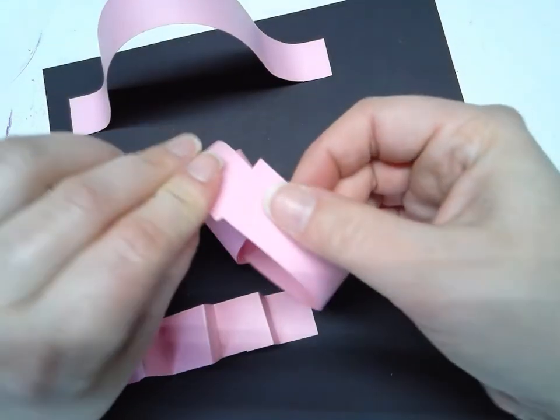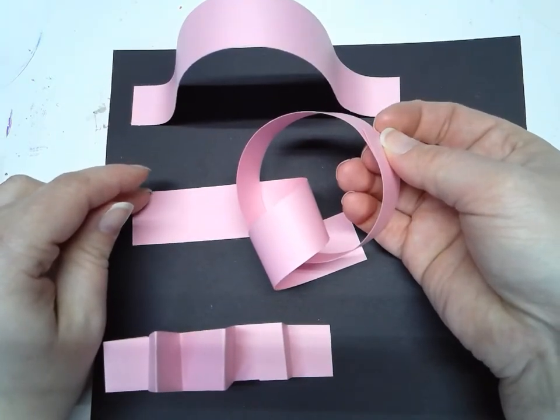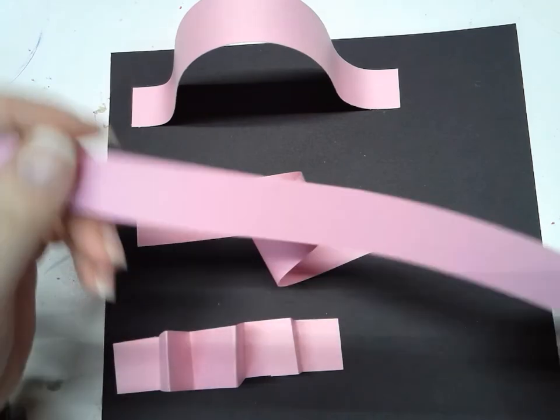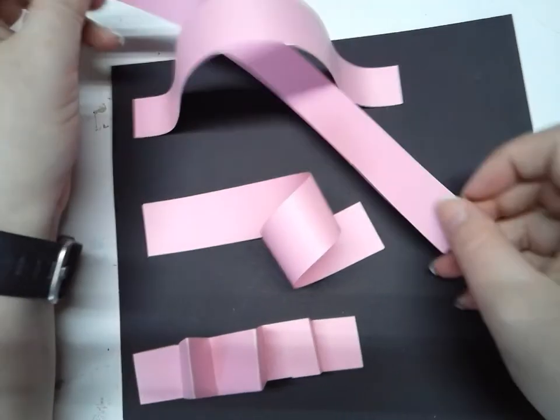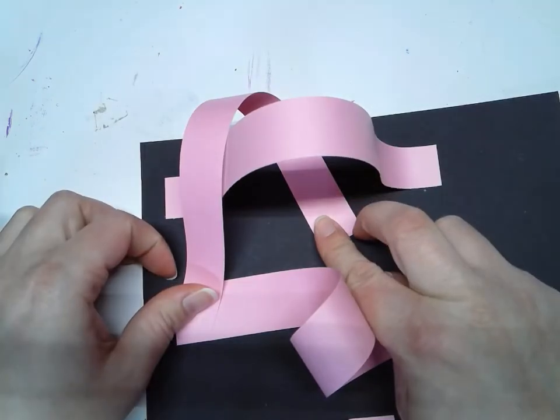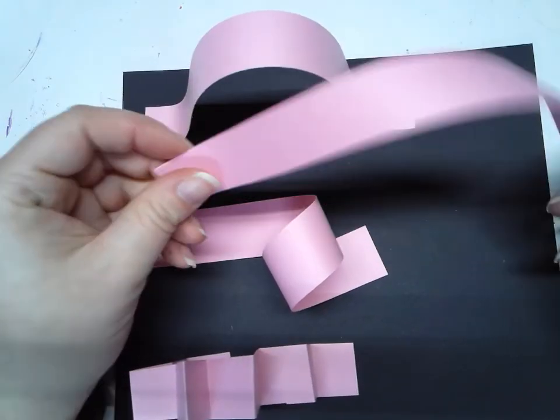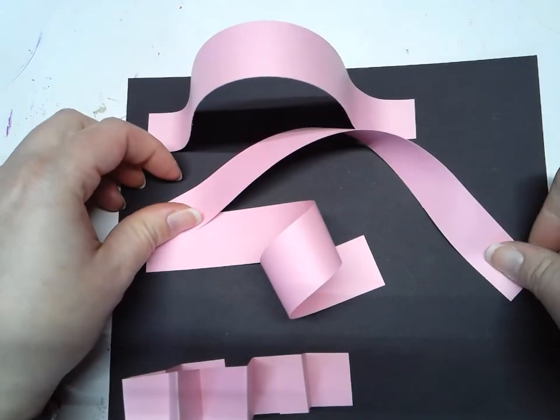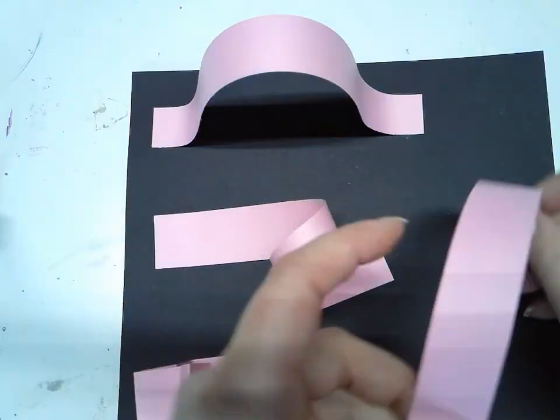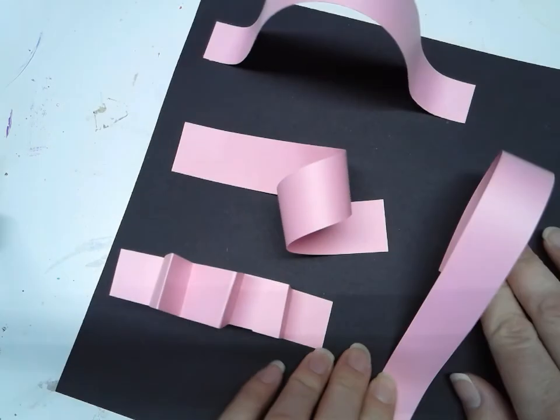Or maybe I want to try gluing it around like this and making it into a circle, or I could try going under this one and looping it around like that. You can figure out lots of different ways that you can use the paper to make different designs by gluing the ends in different spots.